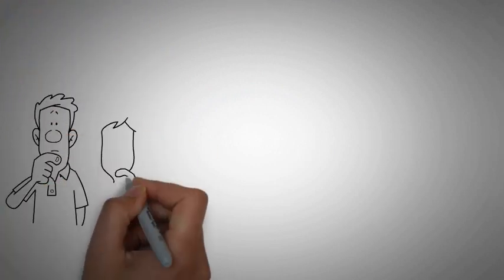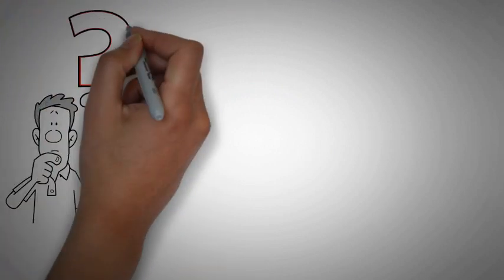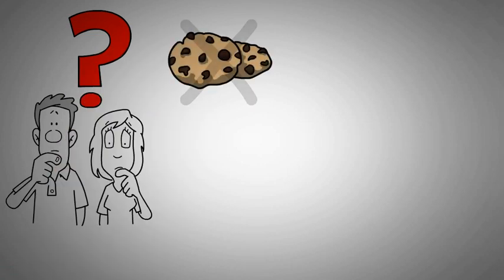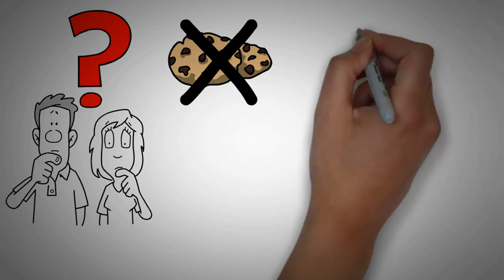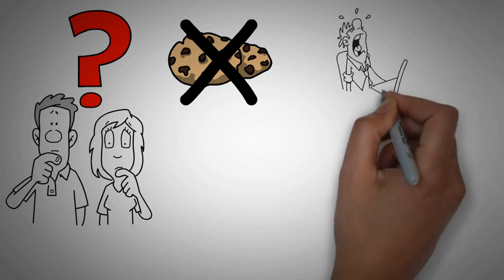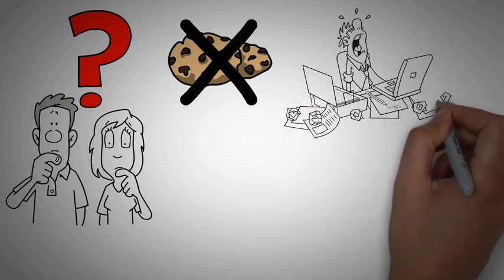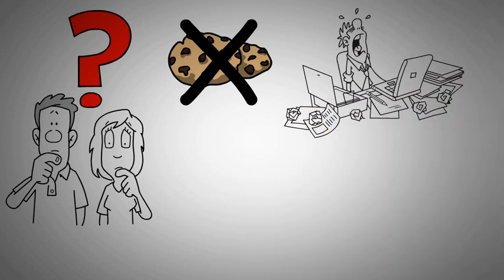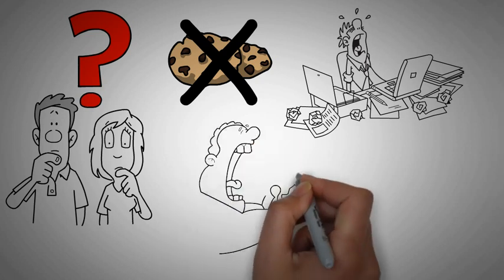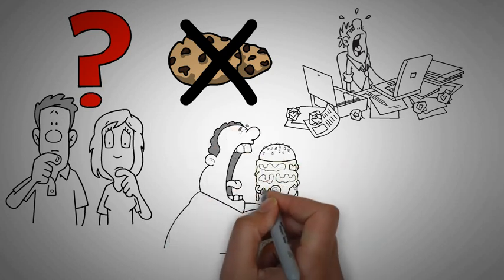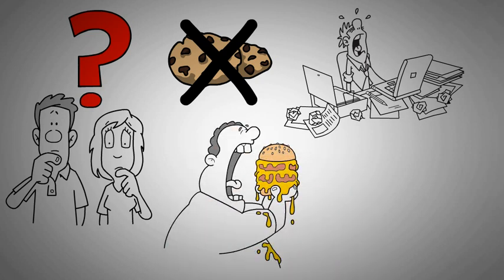Rationally, this doesn't make sense. You would think that if these dieters ate pizza, then they would want to avoid eating cookies to avoid further damage. But humans aren't always logical. Often what happens is that we let a setback derail us and say to ourselves, I blew it. There's no point of even trying now. And then completely sabotage our progress.